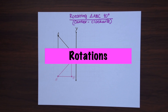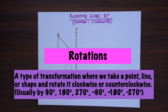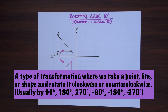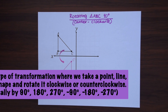Rotations are a type of transformation in geometry where we take a point, line, or shape and rotate it clockwise or counterclockwise — usually by 90 degrees, 180 degrees, 270 degrees, and also those negative degrees: negative 90, negative 180, or negative 270.